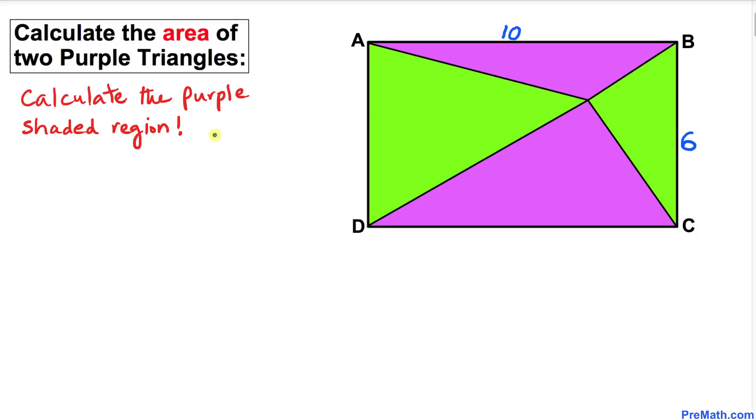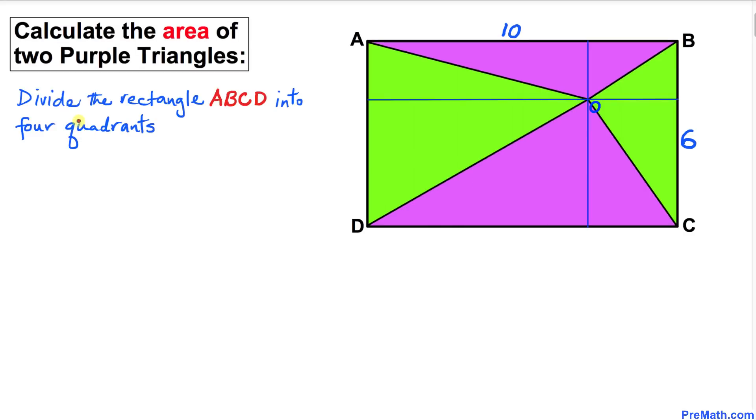Let's get started with the solution. Here's our first step: divide this rectangle ABCD into four quadrants as you can see in this new diagram. Point O is behaving like the origin at this point.